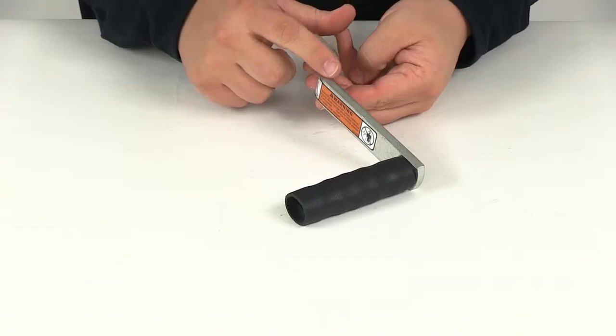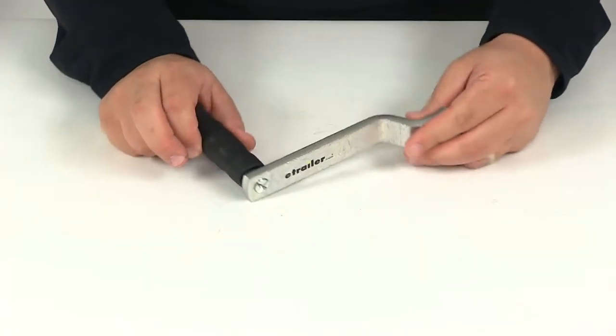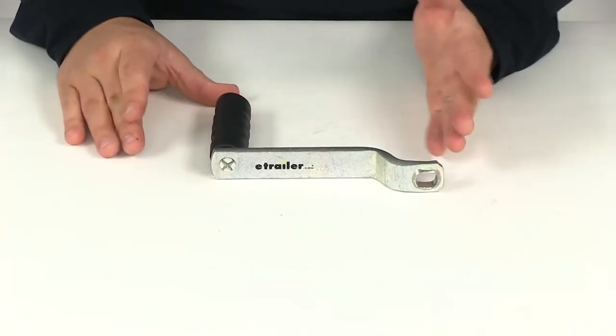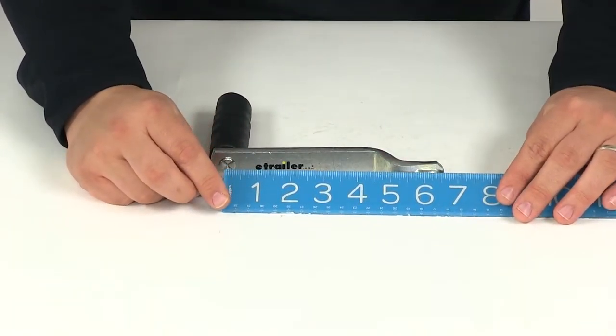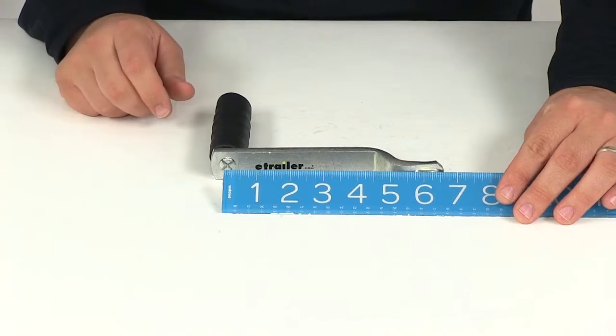It does offer a slight offset as you can see. If we take a measurement of the handle measuring from the center of the mounting location to the center of the hand grip, that's going to give us a handle length of right at six inches.